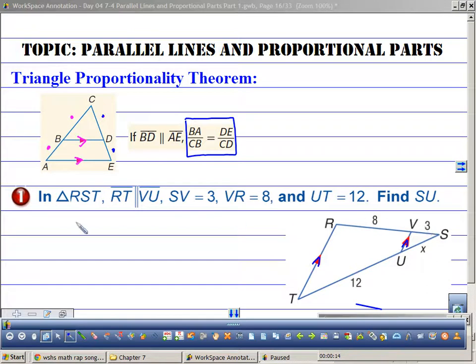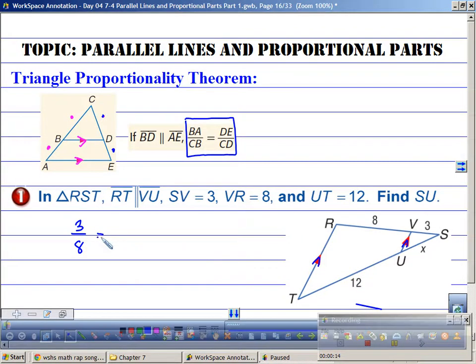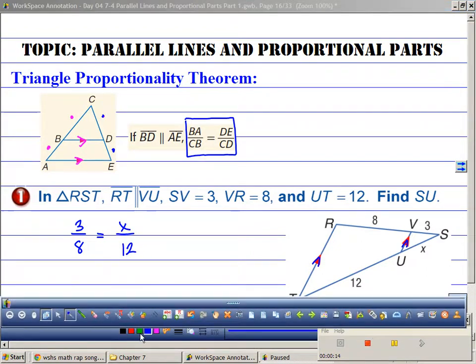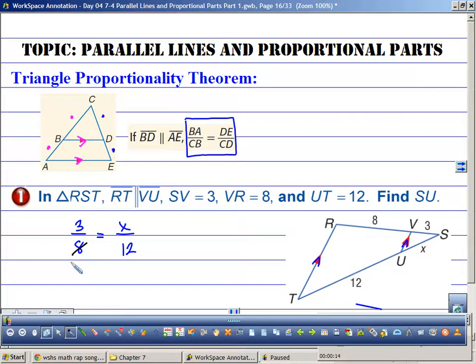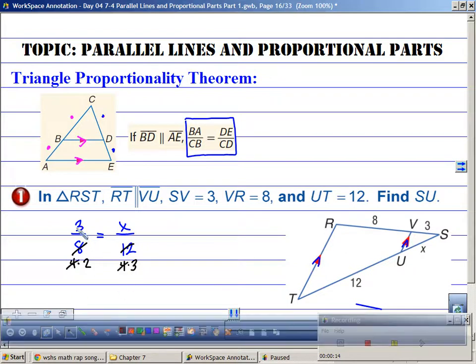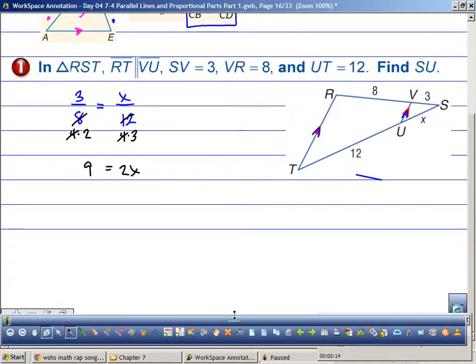So I'm going to set up 3 compared to 8 and X compared to 12. 8 is 4 times 2, 12 is 4 times 3, just making my life a little bit easier. 3 times 3 is 9, equals 2X, divide by 2, X equals 4.5.